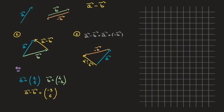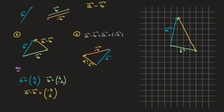Starting with method one, I draw vector A beginning at a chosen point — that's one unit to the right and five units upward. Then starting from the same point, I draw vector B — that's four units to the right and one unit downward. Using this method, the vector A minus B is the vector joining the head of vector B to the head of vector A, which is the yellow vector I'm drawing now. That's my vector A minus B.